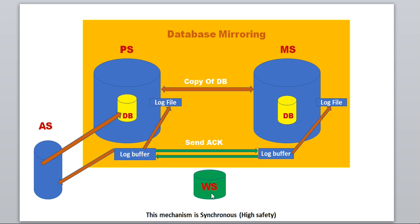We also have a witness server. The use of the witness server is to monitor the health of the principal and mirror servers. Whenever the principal's health is not good, the witness will tell the mirror server to start behaving like a principal. This is the functionality of the witness server — continuous monitoring. We also have an application server.